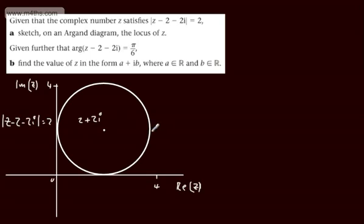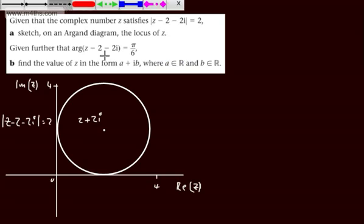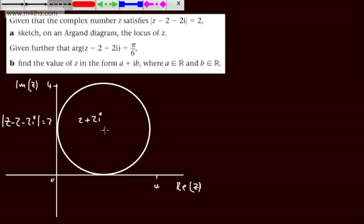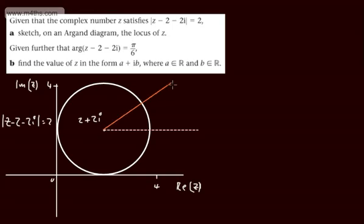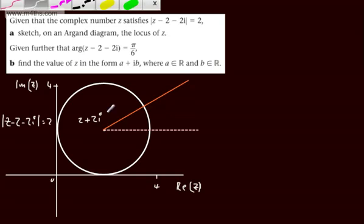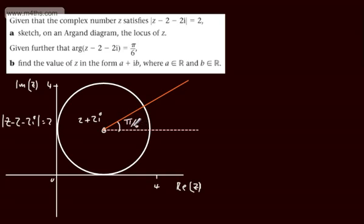If you want to put a radius on, you can do that. Given further, the arg of z minus 2 minus 2i is equal to pi by 6. From the previous videos, we should recognise this as a half line. Putting a line parallel to the real axis, I can measure my pi by 6. I'll take a vector — that looks about pi by 6 — and then we can simply draw this up. Remembering that 2 plus 2i is not included, we put on here pi by 6. This is a half line — it doesn't continue down here.